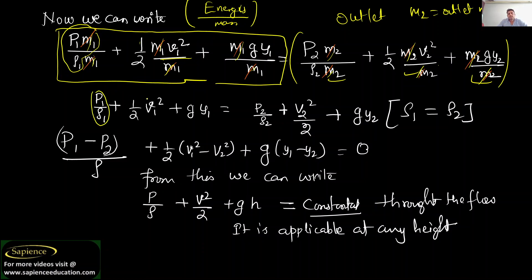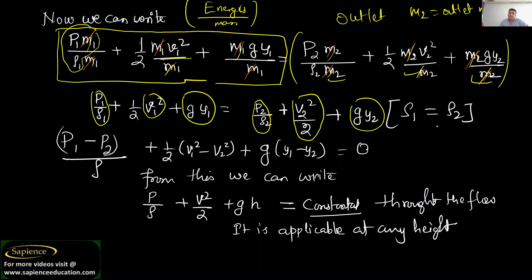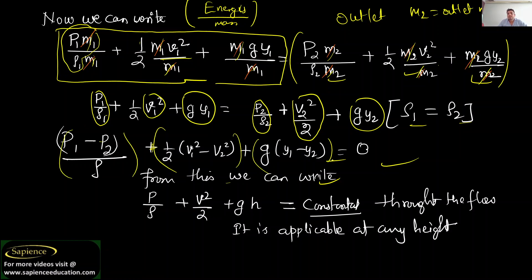After cutting the mass terms, we get: p1/rho1 + half·v1² + g·y1 equals p2/rho2 + half·v2² + g·y2. Since rho1 equals rho2, we can subtract and rearrange: the change in pressure energy per unit mass plus change in kinetic energy per unit mass plus change in potential energy equals zero. This means p/rho + v²/2 + g·h equals constant.